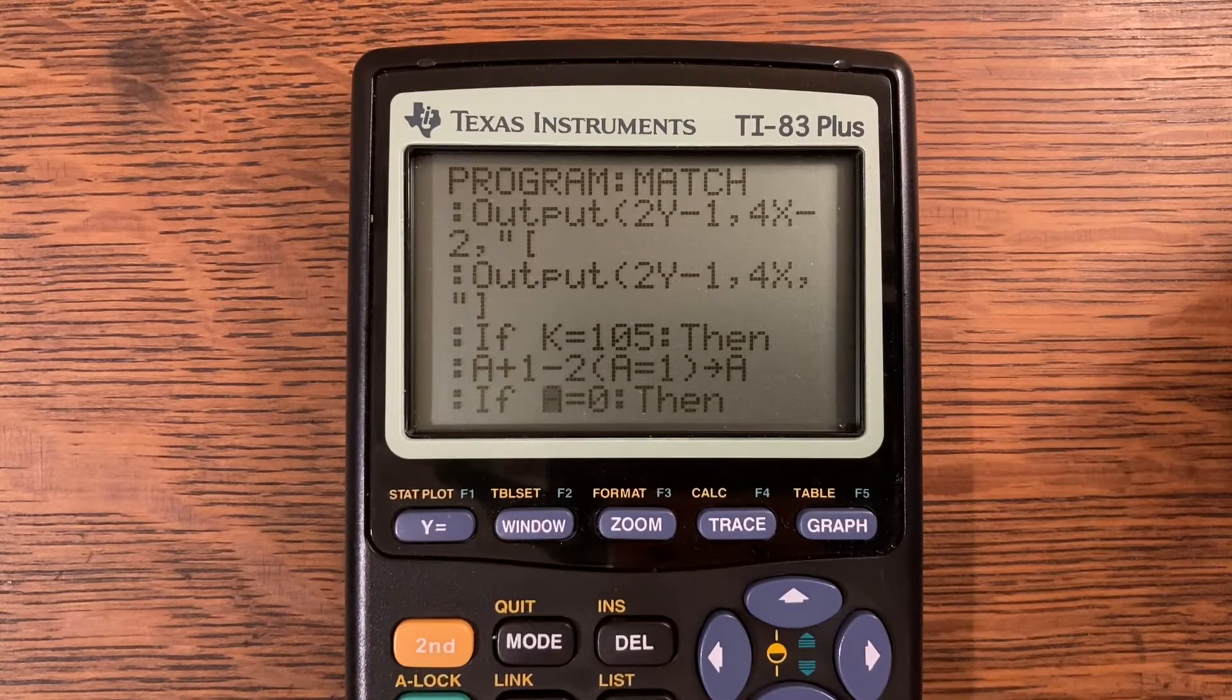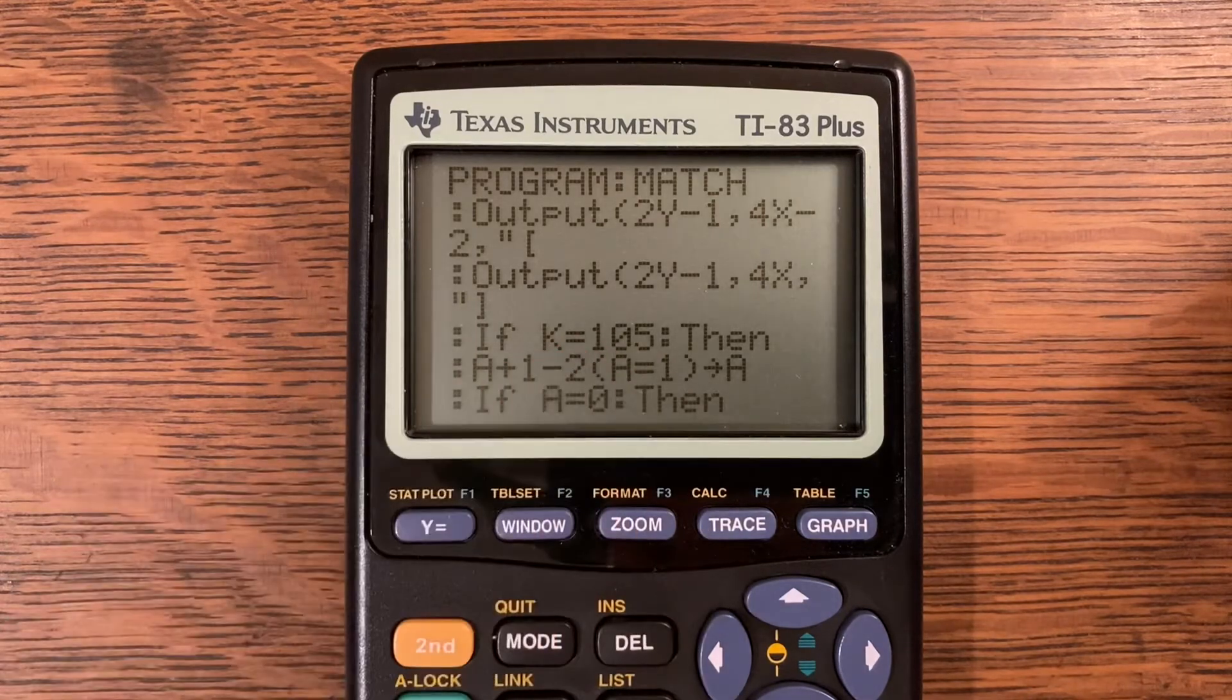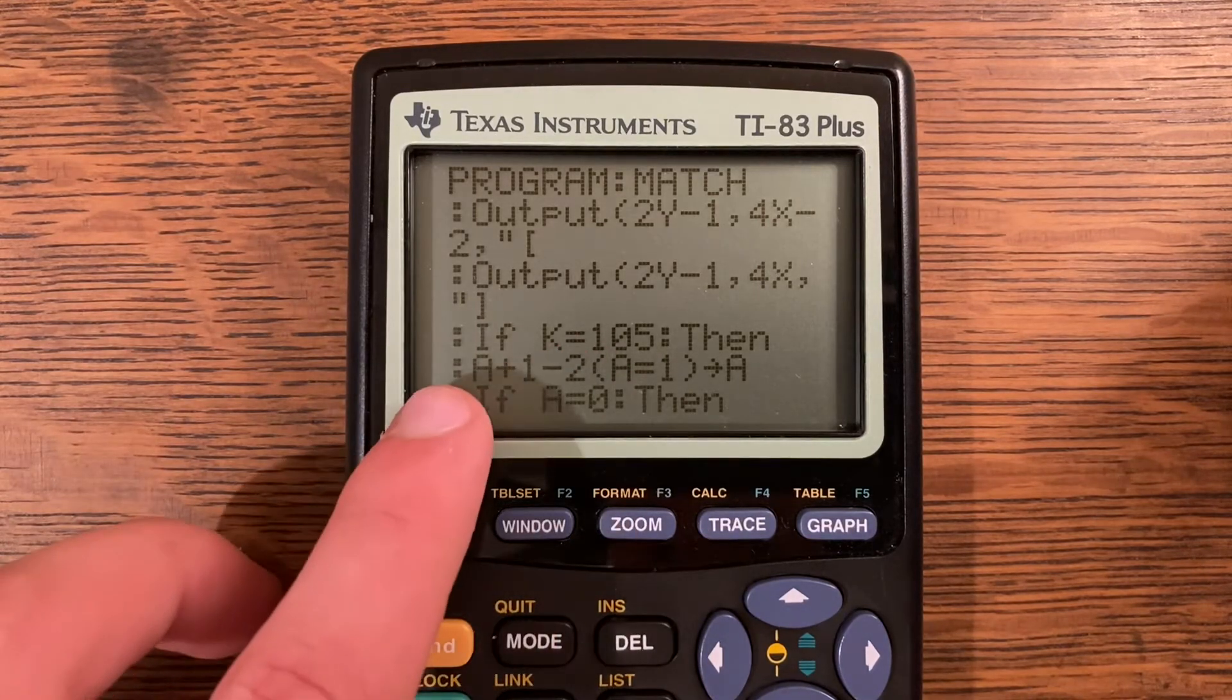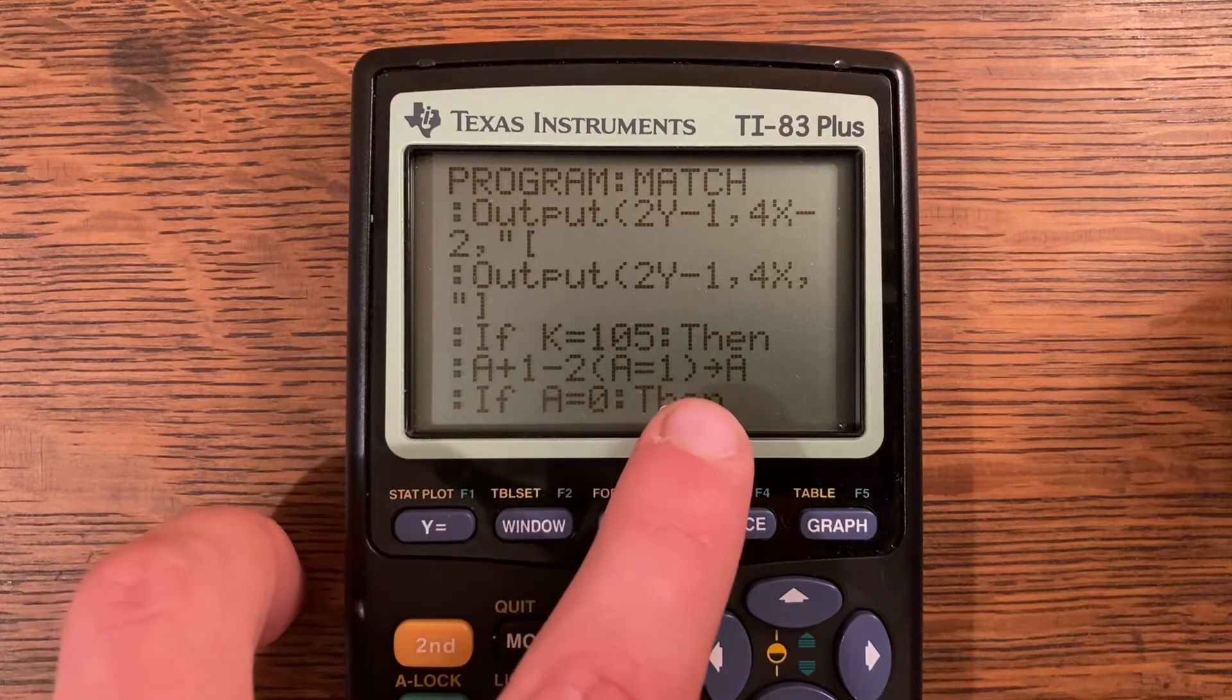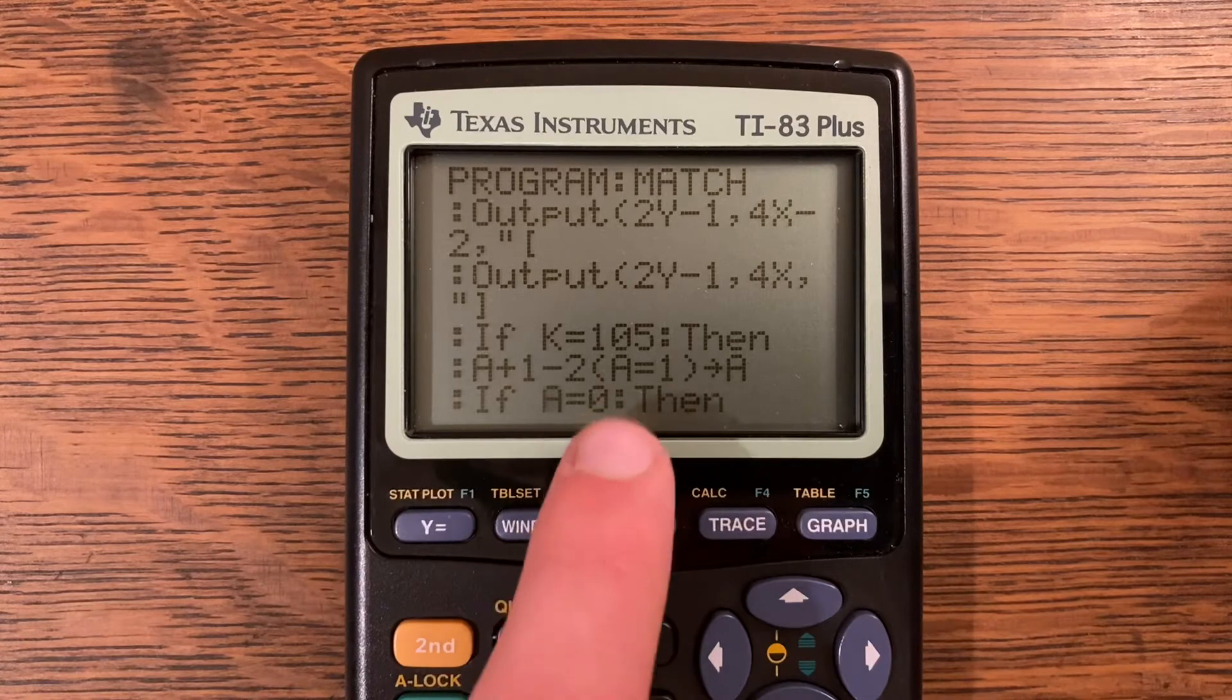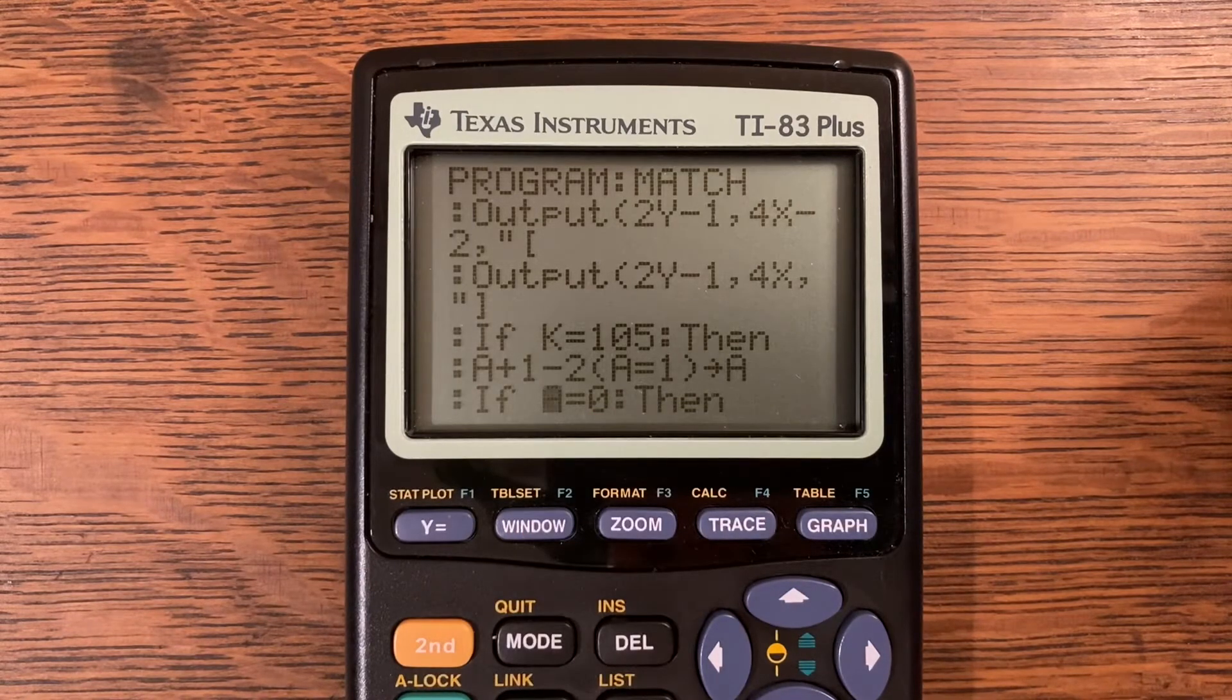If K is equal to 105, so if the enter key is pressed by the player, then A plus 1 minus 2 multiplied by the fact that A is equal to 1 store into A. Make sure you get both of those parentheses in there, those are very important.